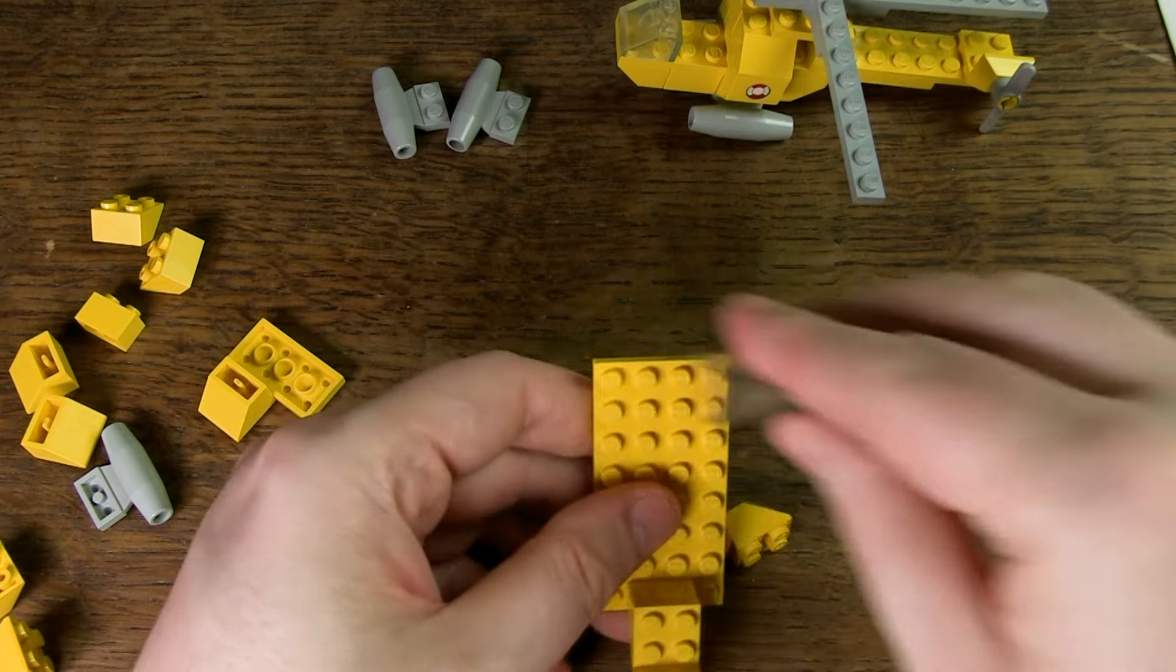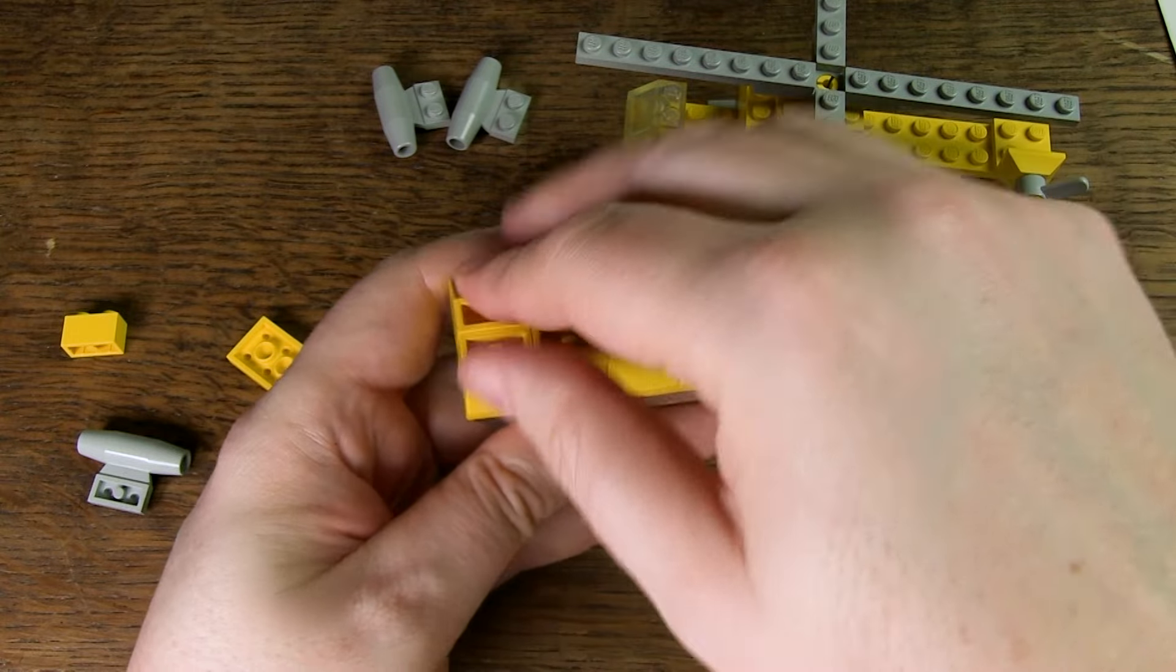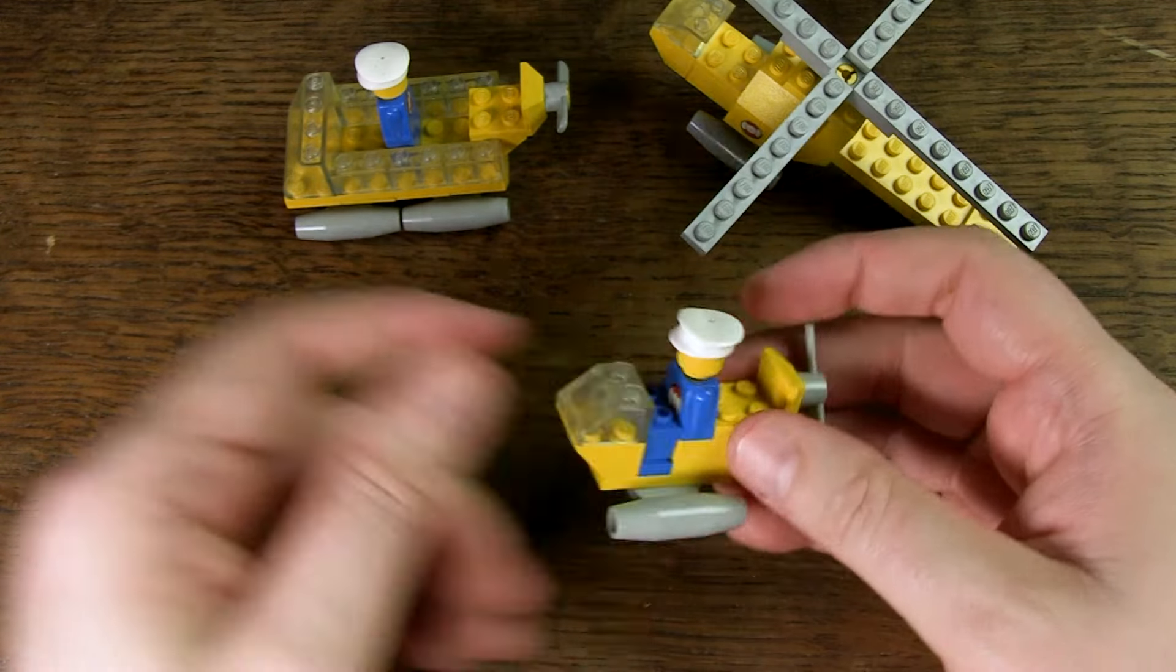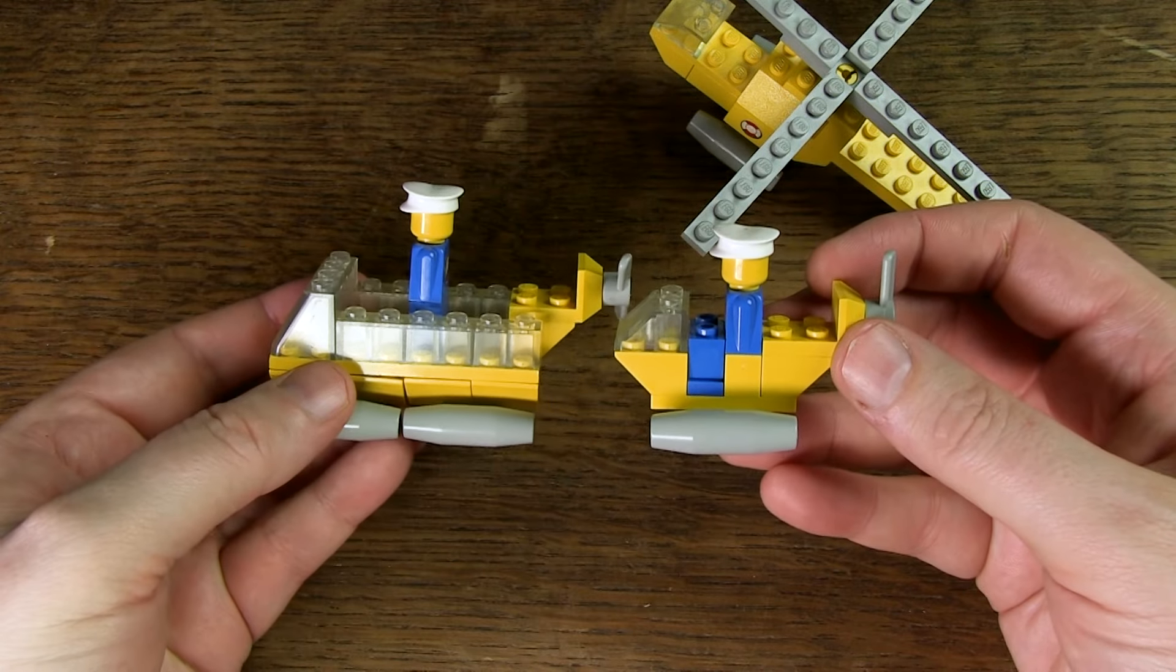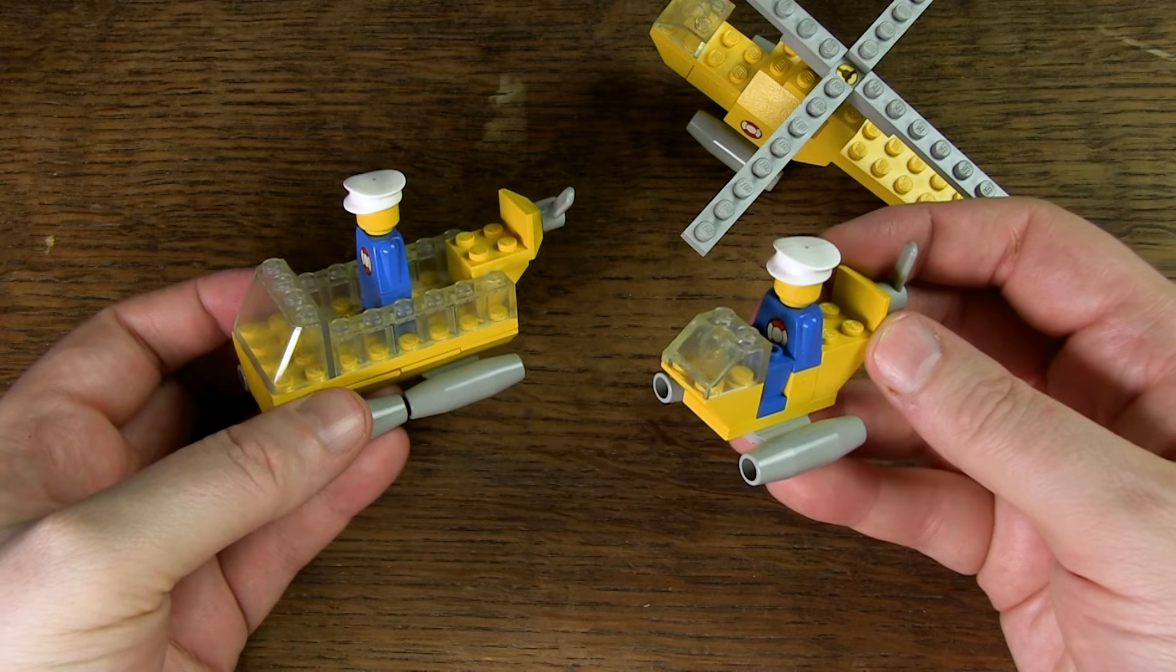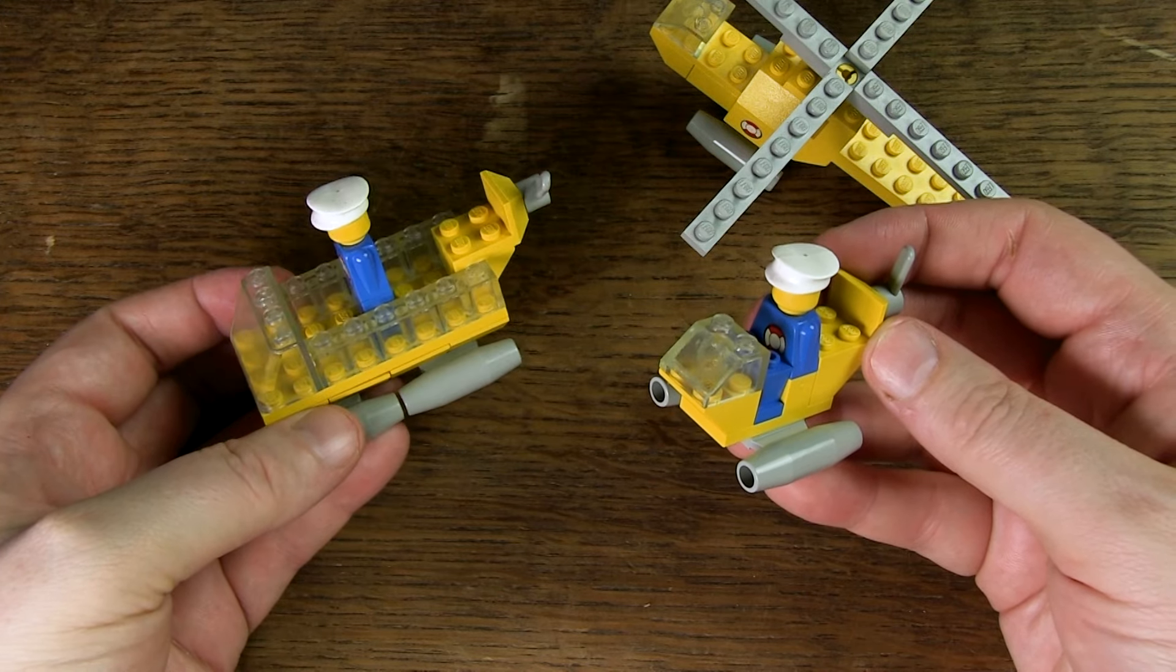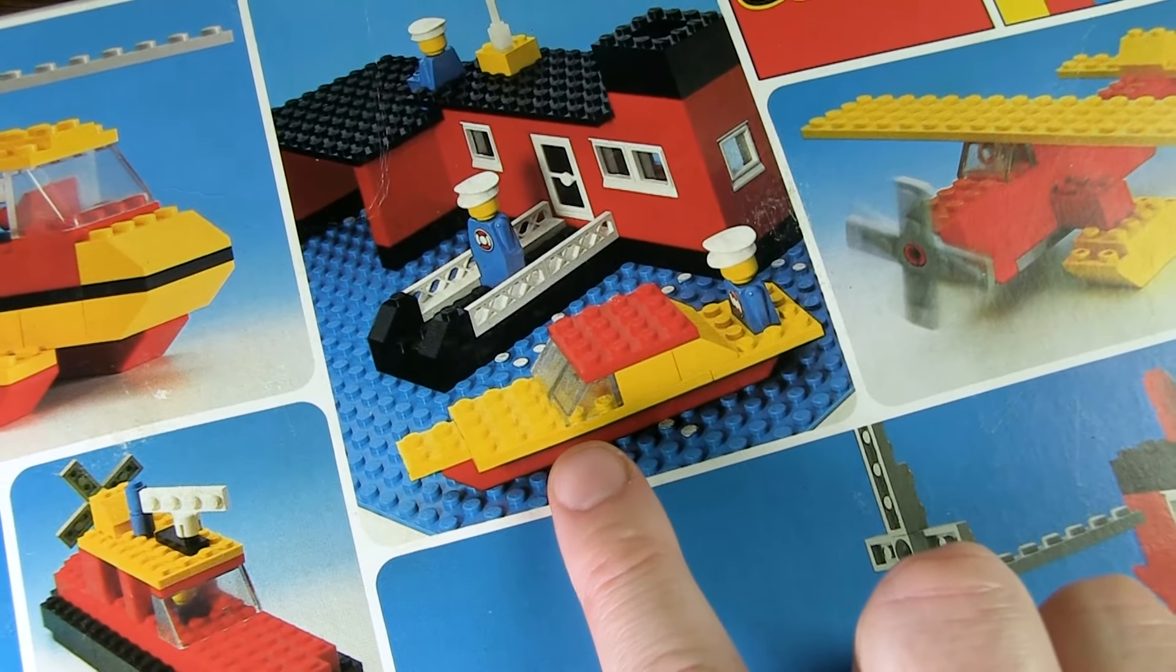In addition to the helicopter, there are also two hovercraft vehicles in the set. It is positive that there are three vehicles in total, but it's a pity that these two are almost identical vehicles. Only the size is different. I would have liked it if there was one hovercraft and some kind of little lifeboat, as shown here with the alternative constructions.